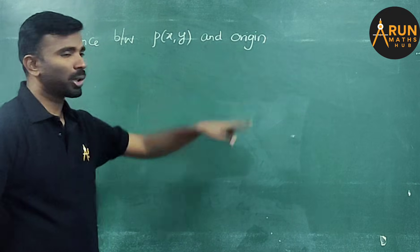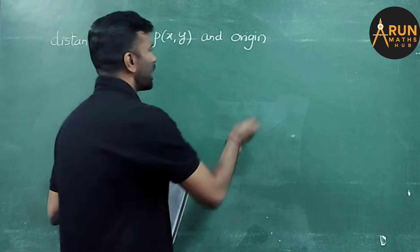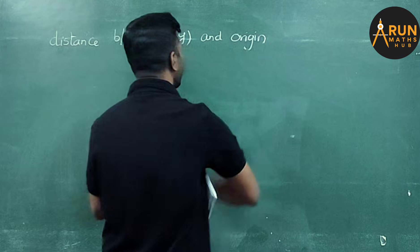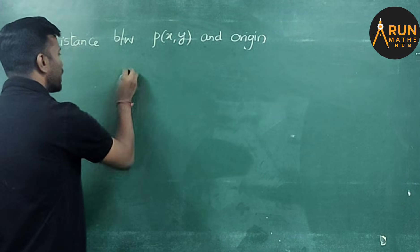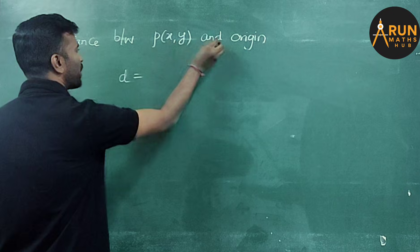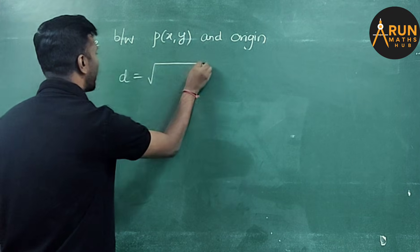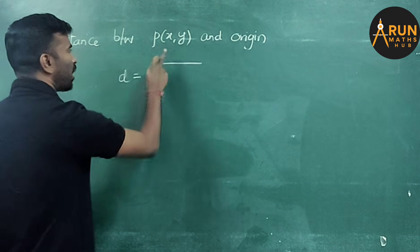The distance between point P of x comma y and origin. Origin means the coordinate will be 0 comma 0. The coordinates of origin will be 0 comma 0.